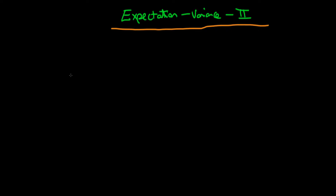In this video I want to continue to talk about some of the properties of taking the expectation of a random vector, and then follow it up with the properties of what it actually means to take the variance of a random vector. Finishing up from last time, we were talking about what it actually means to take the expectation of a random variable x, defined as the expectation of each of its components. So let's now think about what it means to take the expectation of some constant matrix A times our random vector x.